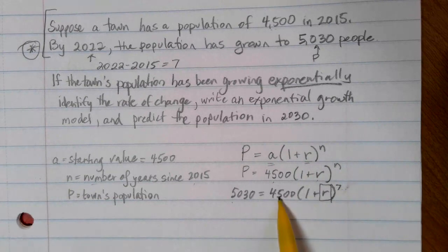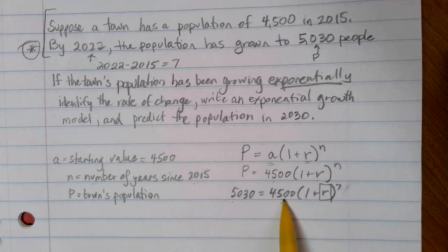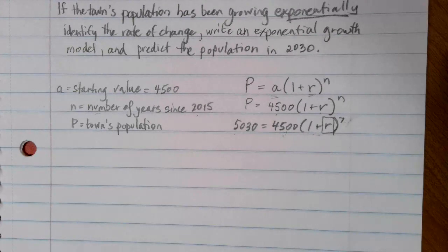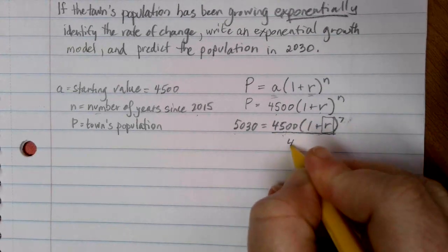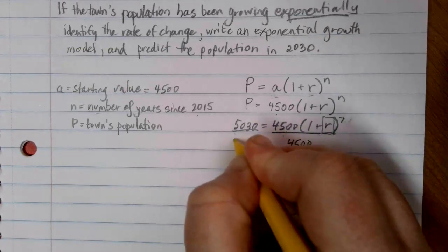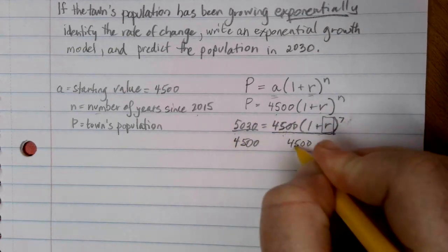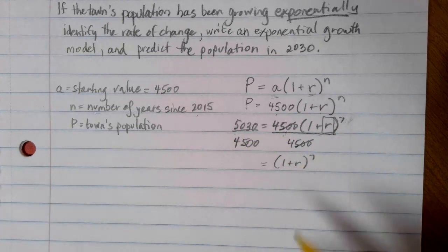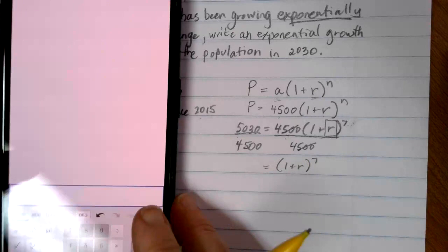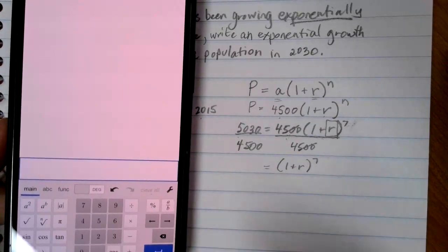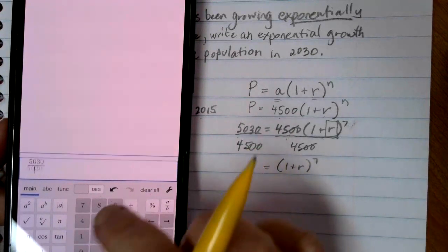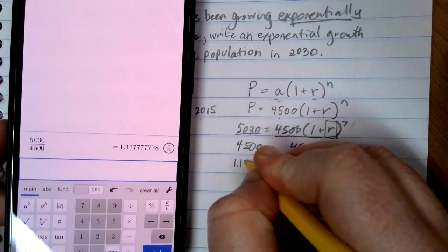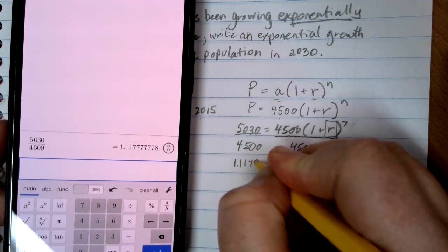To get the R by itself, we have to get rid of everything that's on the same side of the equation. We have to get rid of the 4,500, the 1, and the 7. And of course, it does matter what order you do this in. So we always start by dividing each side by that A value. We're going to divide by 4,500, it's the farthest thing away from the R. On the right-hand side, that just leaves me with 1 plus R to the 7th power.